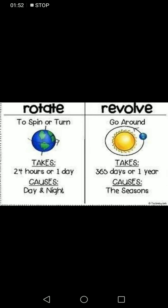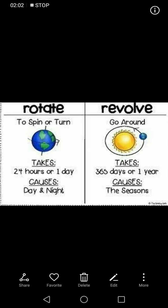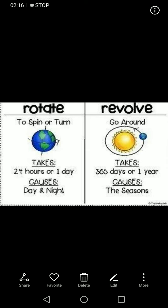Looking at this image again, it explains the rotation and revolution of the Earth. To rotate means to spin or turn; to revolve means to go around. The Earth takes 24 hours, or one day, to rotate on its axis.